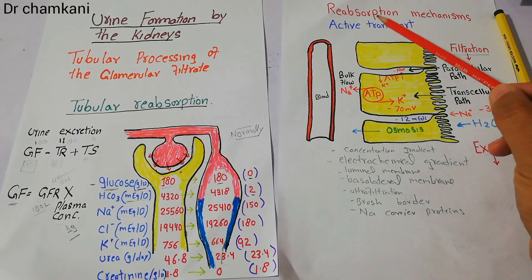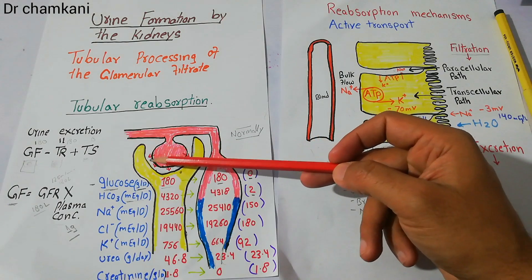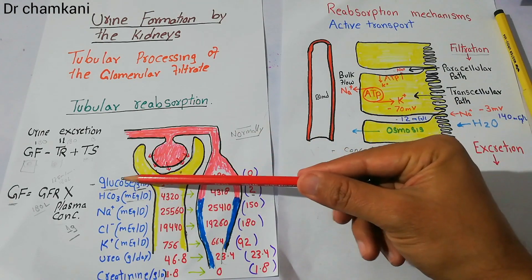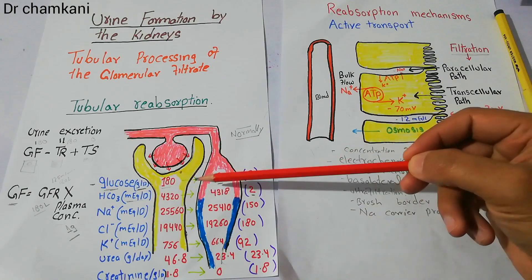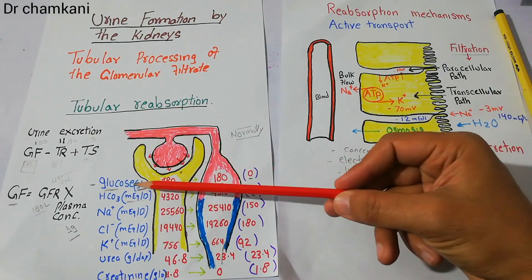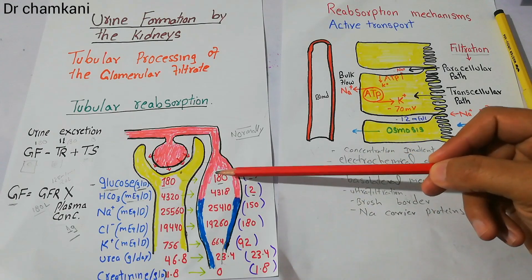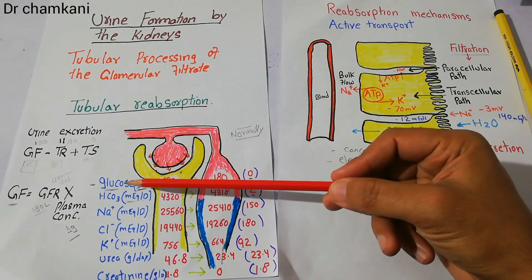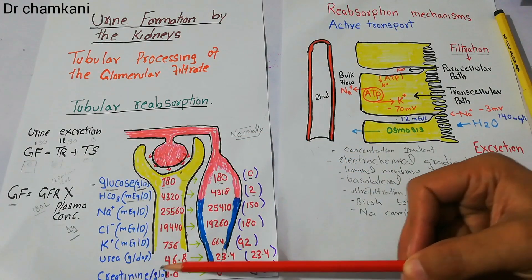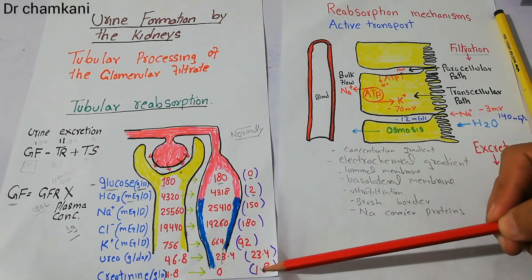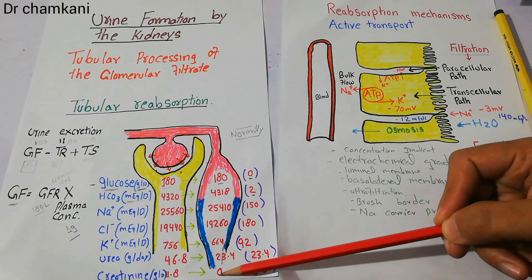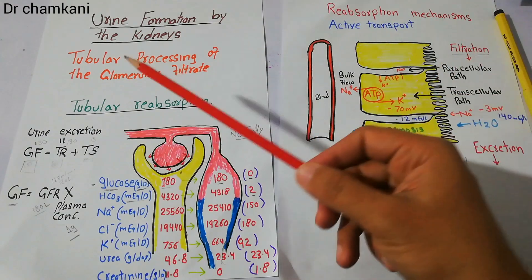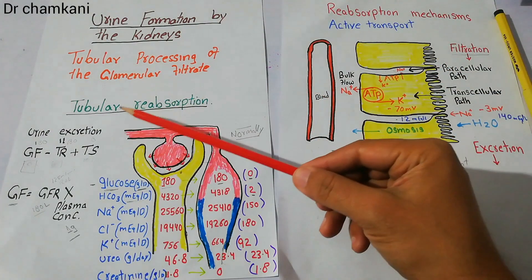When filtration occurs in the nephron at the glomerular capillaries, the filtrate moves into the nephron tubules. As the filtrate moves, important substances which must not be excreted are reabsorbed into the peritubular capillaries. For example, glucose — 180 grams per day is filtered and 180 grams per day is reabsorbed, and zero percent is normally excreted. On the other hand, creatinine — 1.8 grams per day is filtered and 1.8 grams per day is excreted, and zero percent is reabsorbed. The kidneys know what to reabsorb and what not to reabsorb, and that is the purpose of this chapter on tubular reabsorption.